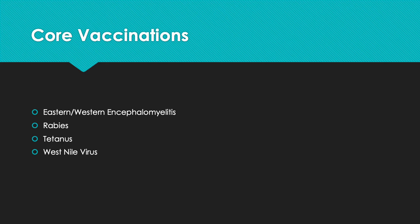Now I'll discuss the core vaccines for equine in depth. These cover eastern and western encephalomyelitis, rabies, tetanus, and West Nile virus. These are the core vaccines that every animal needs — whether pasture pets or show animals, little donkeys, miniature ponies — everything needs these four vaccines.